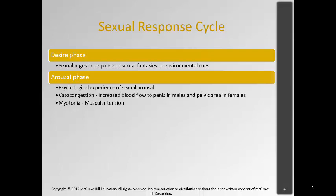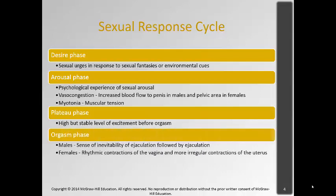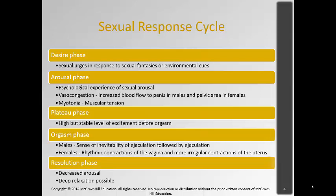There's the desire to have sex and then vasocongestion — increased blood flow to the penis in males and to the pelvic area in females. You'll also experience myotonia, which is muscle tension. The plateau phase is the high but stable level of excitement right before orgasm. In males, orgasm is the sense of inevitability of ejaculation followed by ejaculation. In females, it's the rhythmic contraction of the vagina and irregular contractions of the uterus. After this is the resolution phase where there's decreased arousal and deep relaxation; many people fall asleep immediately following orgasm.